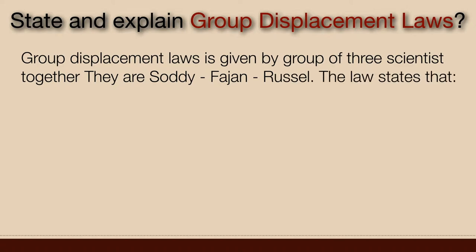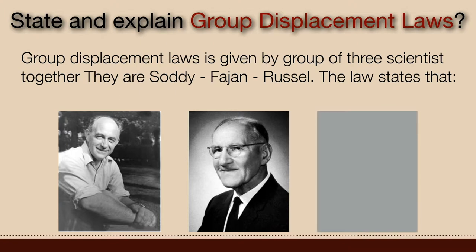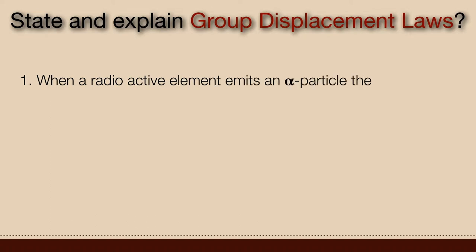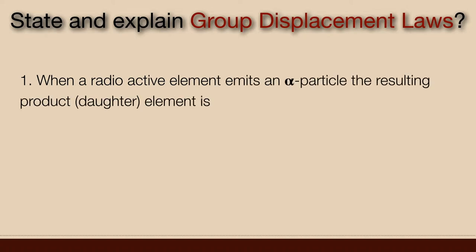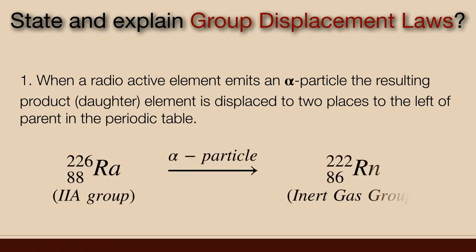The law states that when a radioactive element emits an alpha particle, the resulting daughter element is displaced two places to the left of the parent in the periodic table. For example, radium-226 on emitting an alpha particle produces radon-222. Radium belongs to the 2A group while radon belongs to the inert gas group.